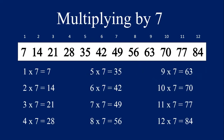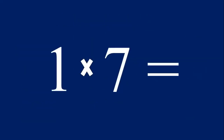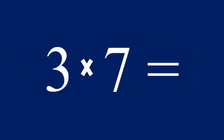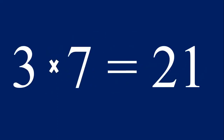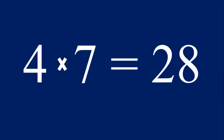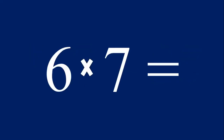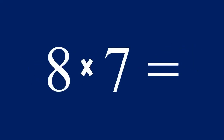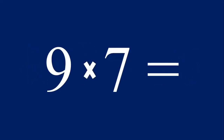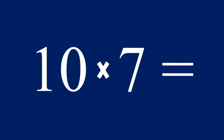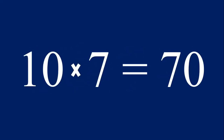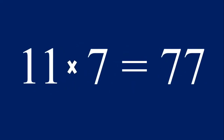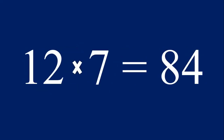Let's multiply one through twelve by the number seven. One times seven equals seven, two times seven equals fourteen, three times seven equals twenty-one, four times seven equals twenty-eight, five times seven equals thirty-five, six times seven equals forty-two, seven times seven equals forty-nine, eight times seven equals fifty-six, nine times seven equals sixty-three, ten times seven equals seventy, eleven times seven equals seventy-seven, and twelve times seven equals eighty-four.